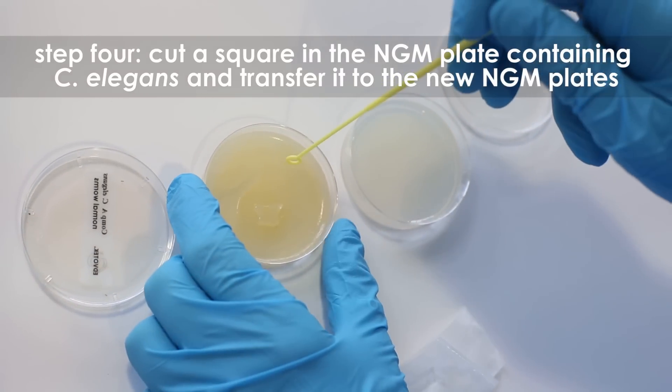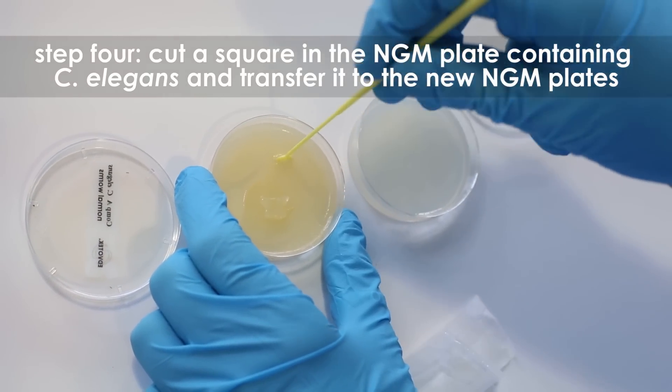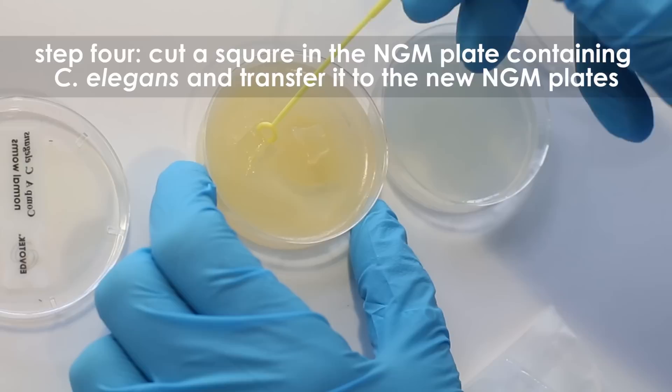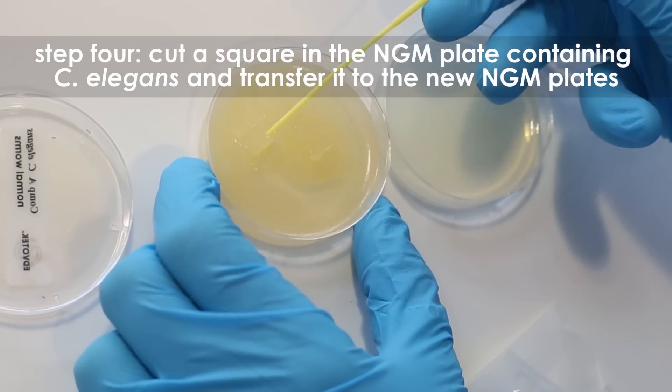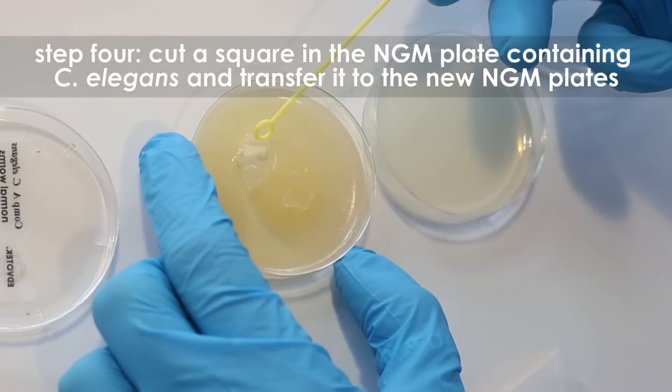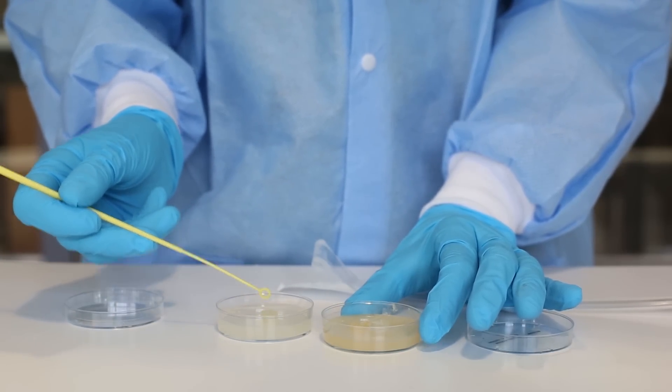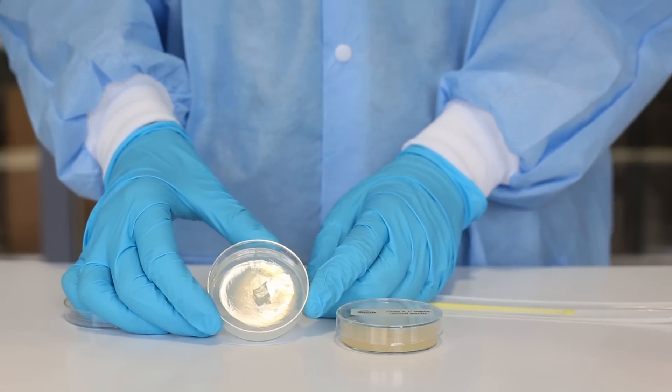Step 4: The next day, use a sterile loop to cut a small square of the NGM plate containing live C. elegans. Remove the chunk of agar from the old plate and transfer it to one of the newly inoculated NGM plates prepared in the previous steps.